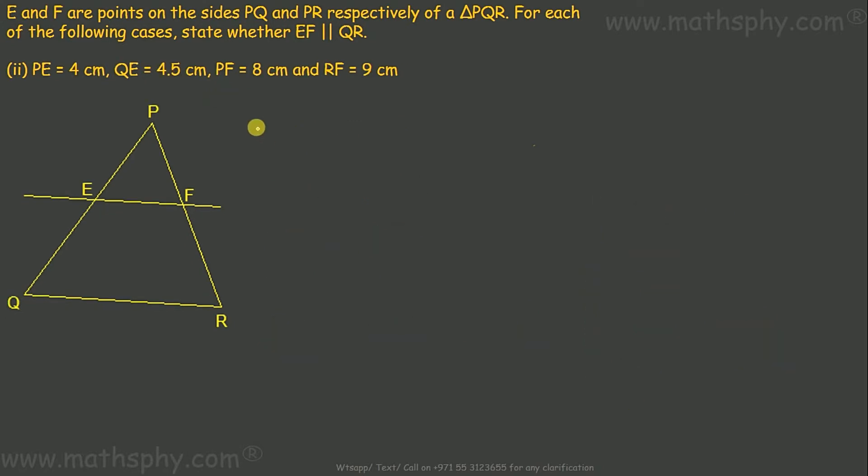This one here. Let's see what is PE over QE. PE over QE is 4 over 4.5. And PF over RF is 8 over 9.